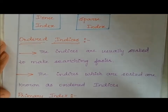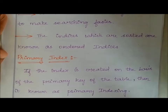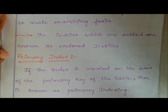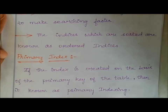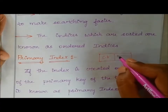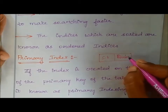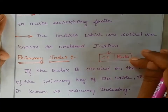Let's see what a primary index is. If the index is created on the basis of the primary key of the table, then it is known as a primary index. In indexing, there are two columns: the first column is the search key and the second one is the pointer — a reference inside the pointer or address. If the search key is the primary key, then the indexing is known as primary indexing.